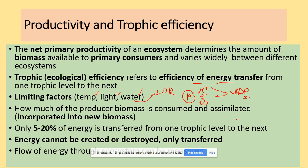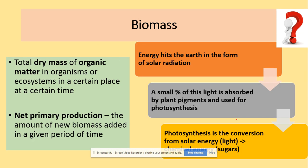The flow of energy through the ecosystem can be measured, and this is what we will be looking at today. To recap: biomass is the total dry mass of organic matter — we're not interested in water. The net primary production is the amount of new biomass added in a given period of time, and it equals gross primary production minus respiratory loss.